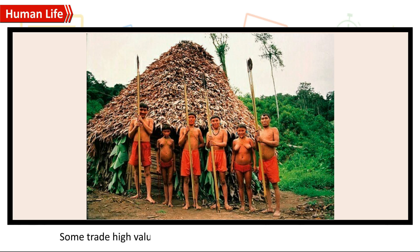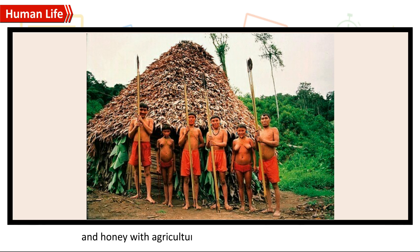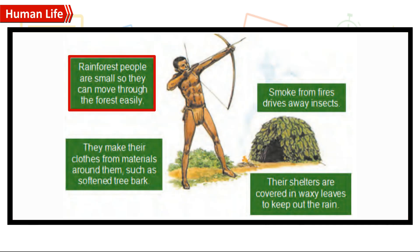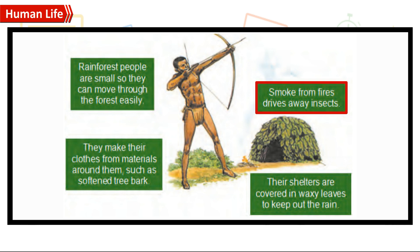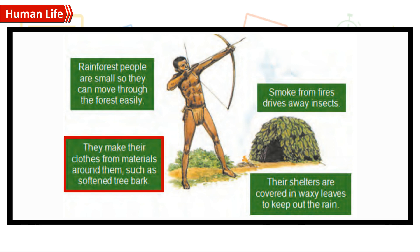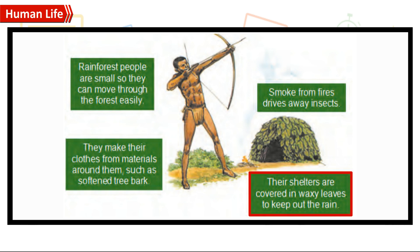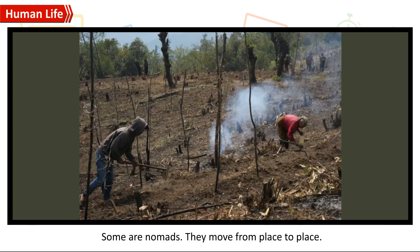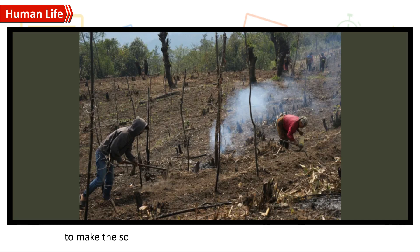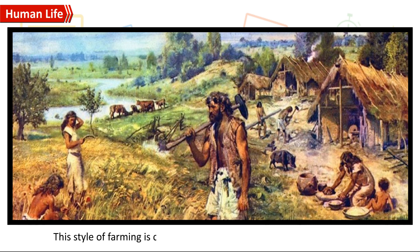Some rainforest people trade high-value forest products such as animal hides, feathers, and honey with agricultural people living outside the forest. Rainforest people are small so they can move through the forest easily. Smoke from fires drives away insects. They make their clothes from materials around them, such as softened tree bark, and their shelters are covered in waxy leaves to keep out the rain. Some are nomads who move from place to place, chopping down trees to make small clearings, spreading the ashes to make the soil fertile for a while before moving on. This style of farming is called slash and burn.